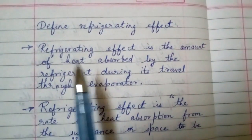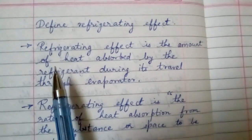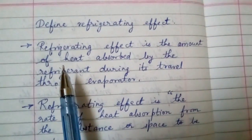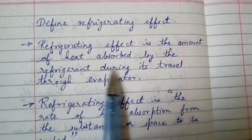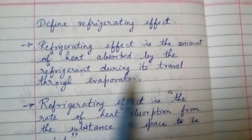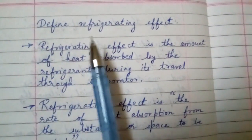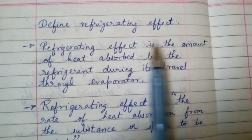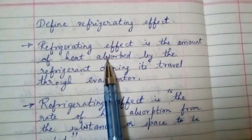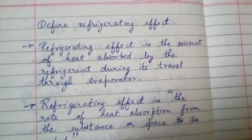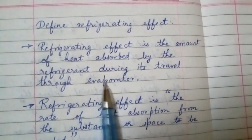What is refrigerating effect? It is the amount of heat which is absorbed by the refrigerant during its travel through the evaporator. So refrigerating effect is the quantity or amount of heat which is absorbed by the refrigerant when it is traveling through the evaporator.